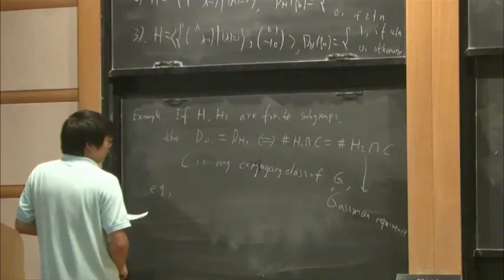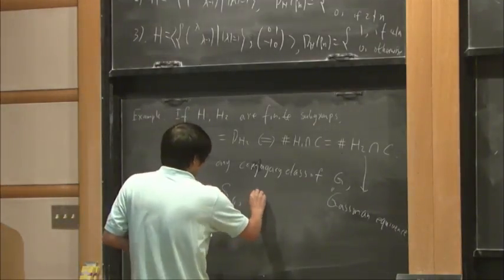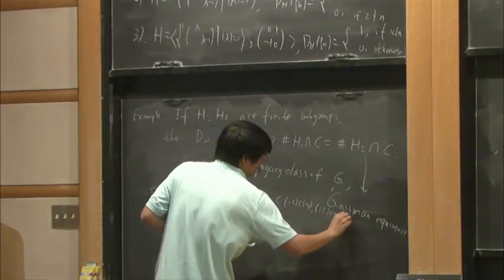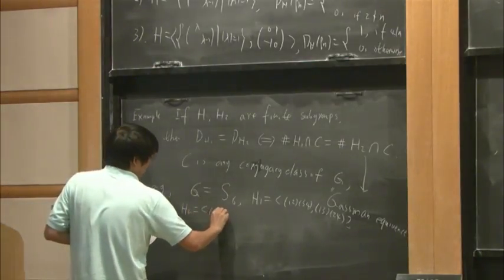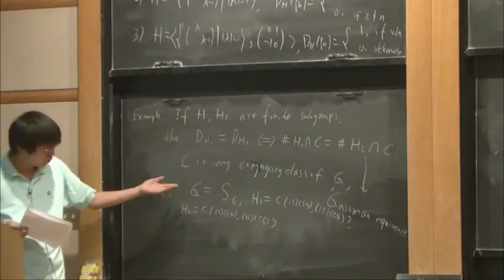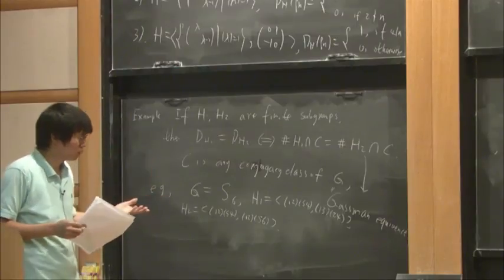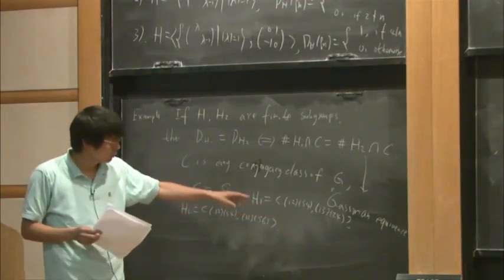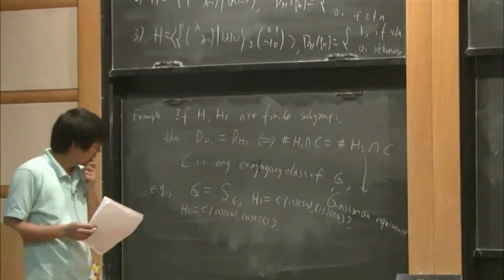So for this example, we take G equals S6, or you can take U6 or SU6. And then we take a subgroup H1 generated by these two permutations: (1,2), (3,4), and (1,2)(3,4)(5,6).